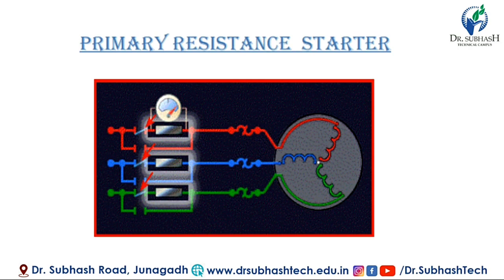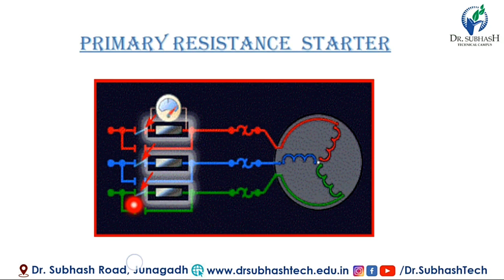You can see the image of primary resistance starter here. This is a rotor. R connection is given to the R ring, Y connection is given, blue connection is given to blue ring, and green connection is given to green ring.